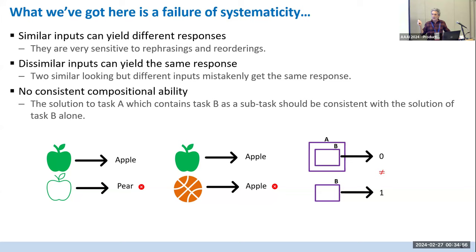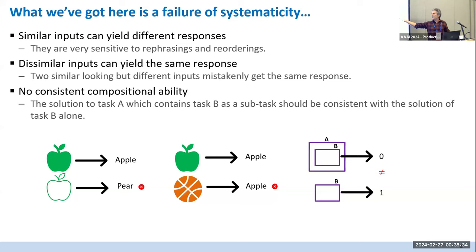Dissimilar inputs can yield the same response. And importantly, they don't have any consistent compositional ability. Often this is characterized as: they don't reuse solutions — they don't figure out task B and then use it to do better on task A. But even beyond that efficiency issue, even if they were to redo task B as part of task A, you often get a result from task A that's inconsistent with what you'd get doing B alone. What you'd really like is that if task B is necessary to solve A, the output from A should be consistent with B done independently.